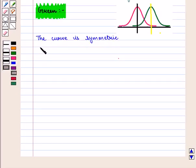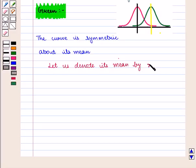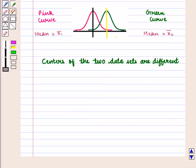The center of this curve is symmetric about its mean. Let us denote its mean by x2 bar. We can see that the centers of the two data sets are different.